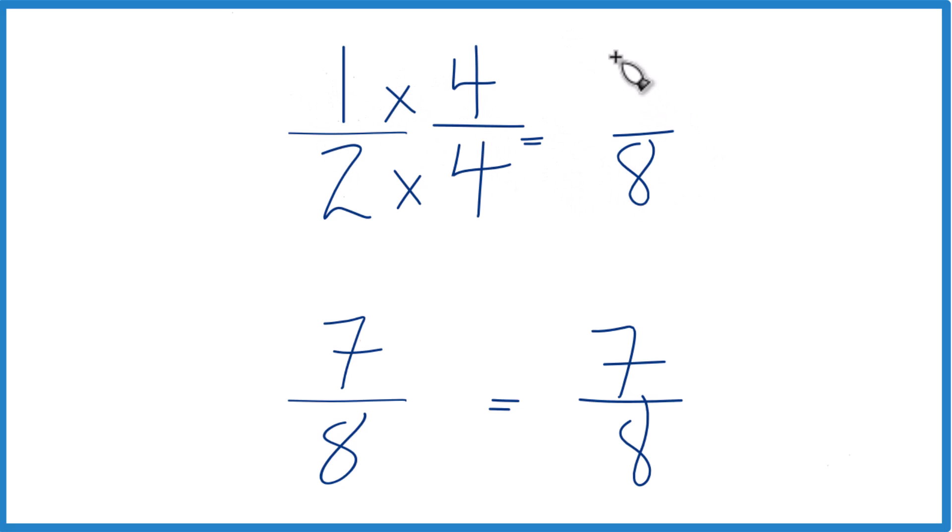One times four, that's four. Now we have the same denominator, we can compare the numerators. You can see that seven is greater than four, so seven-eighths, that's greater than four-eighths.